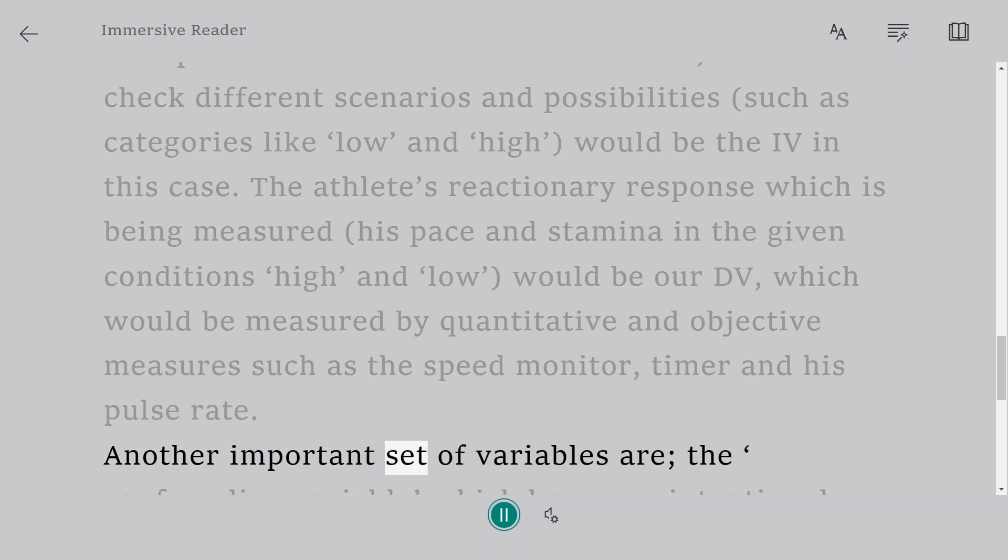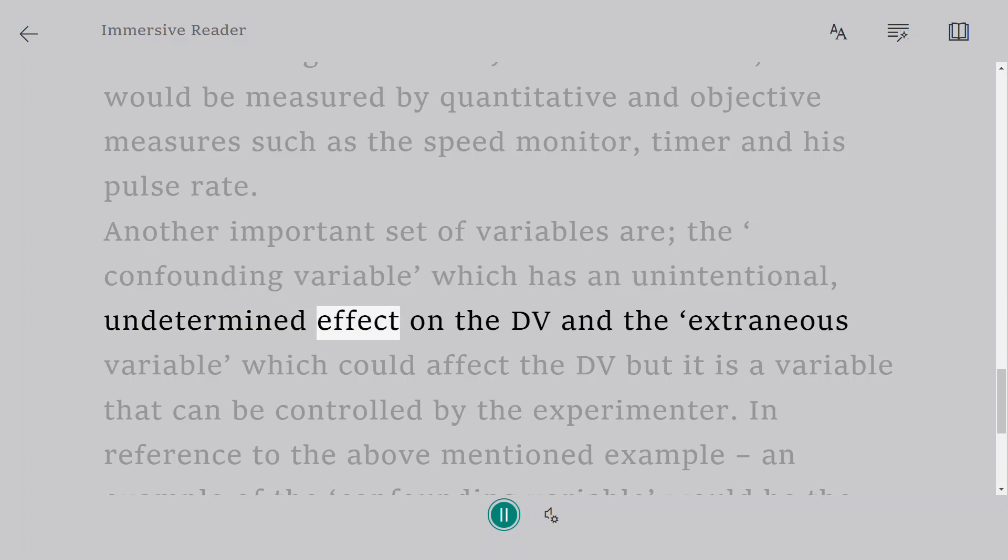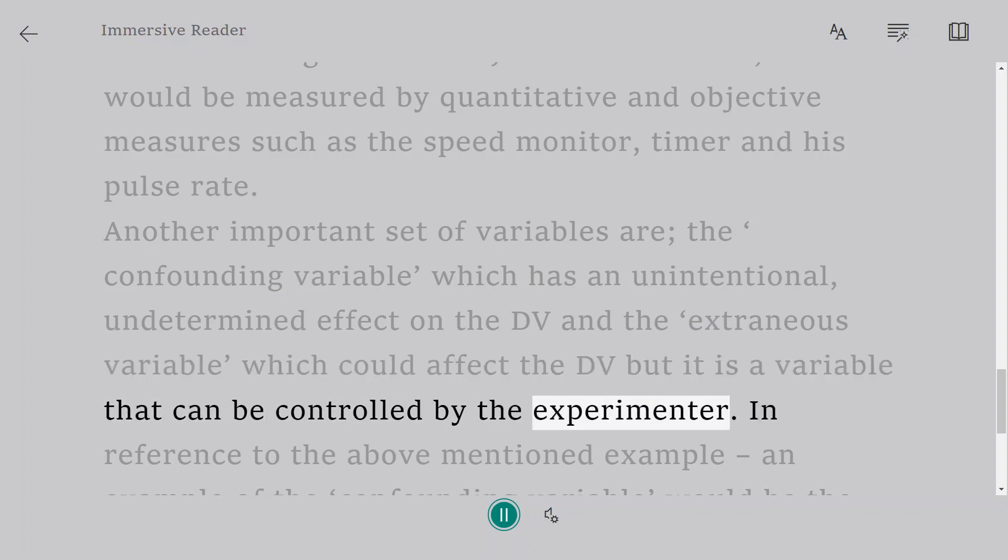Another important set of variables are the confounding variable which has an unintentional, undetermined effect on the DV and the extraneous variable which could affect the DV but it is a variable that can be controlled by the experimenter.